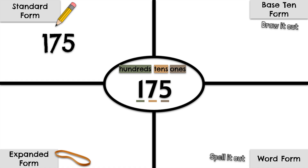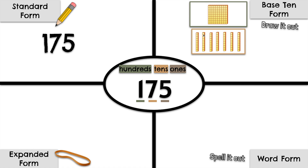Let's show it in base 10 form. We need 1 hundred. We need 7 tens: 1, 2, 3, 4, 5, 6, 7. Let's count: 10, 20, 30, 40, 50, 60, 70. The 7 is worth 70. And we need 5 ones: 1, 2, 3, 4, 5. So we have 100 plus 7 tens which is 70 plus 5 ones.